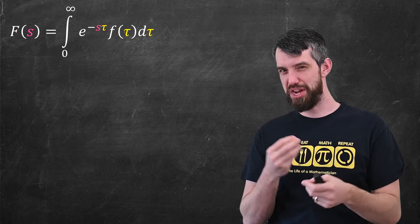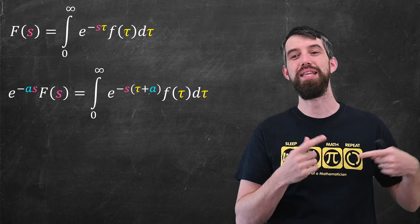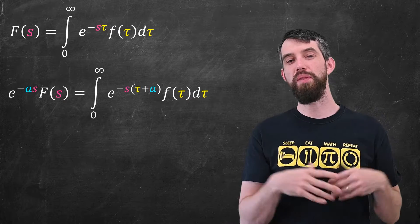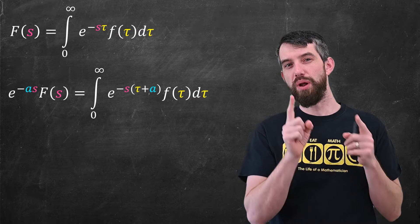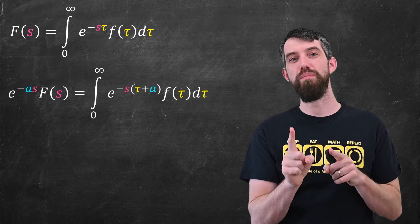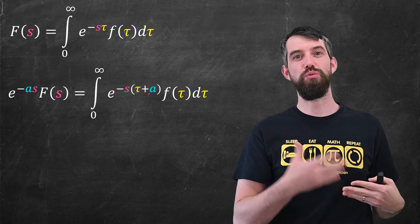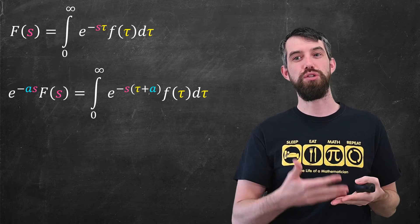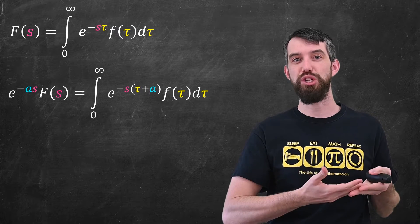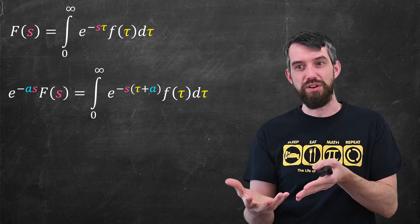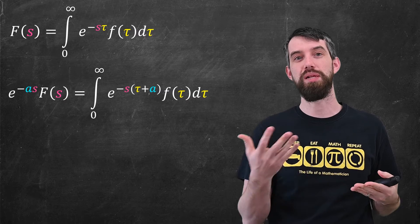Now, working slightly in reverse knowing where this is going to go, I'm going to multiply both sides by e to the minus a·s. On the left side, I just multiplied by e to the minus a·s. But on the right side, notice where multiplying by e to the minus a·s ended up — it ended up inside of the integral. The reason is that this is an integral with respect to tau, and e to the minus a·s is just a constant with respect to tau, so you can take that multiplication inside the integral. I combined it with the exponential already there and got e to the minus s times tau plus a.